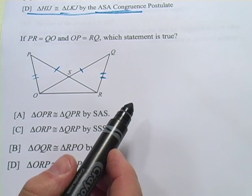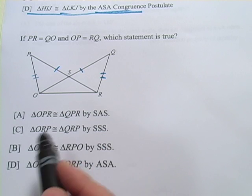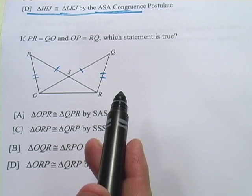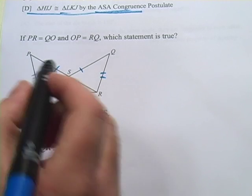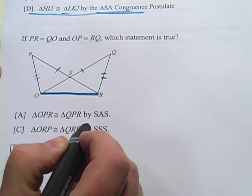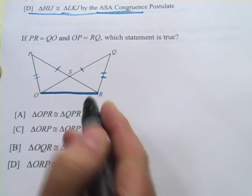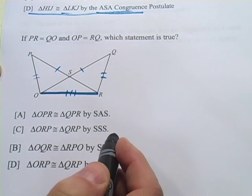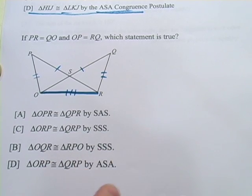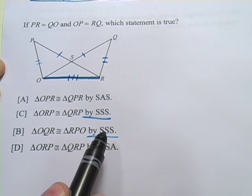Which statement is true? At this point we have two sides and no angle, so we need to find either another angle or another side to make one of our congruence postulates work. If you look at these two triangles, this shared side is a side for both of them. Since a line is obviously congruent to itself, this is the third congruent side. So what we have is two triangles with three congruent sides. And once again, we've got two answers with the side-side-side postulate.